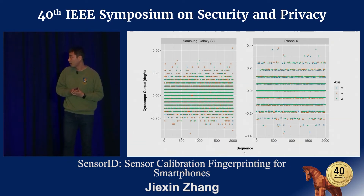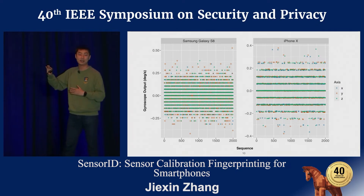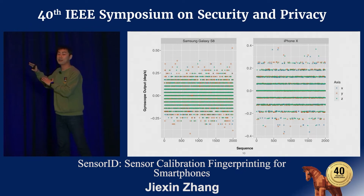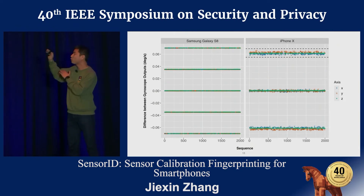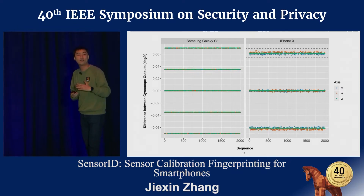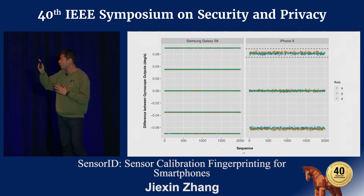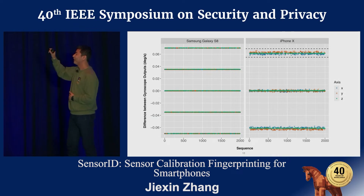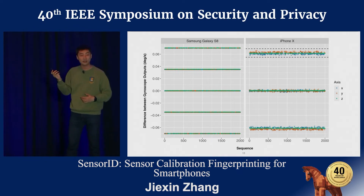Here is an example. This graph shows the gyroscope output from two devices: the Samsung Galaxy S8 and the iPhone X. You can notice a clear quantization on the sensor output, because the ADC values are integers. If we subtract the sensor outputs, as discussed, we get the figure shown. If a sensor is not factory calibrated, all the values within a single quantile would be the same — and this is the case for the Samsung Galaxy S8. But for iPhone X, there is a strong fluctuation in the quantile between the two black dashed lines, which proves that the gyroscope in the iPhone X is factory calibrated.